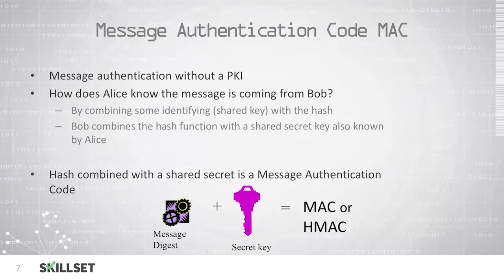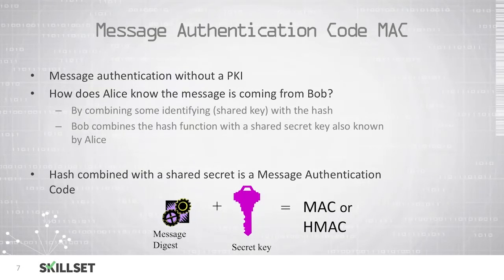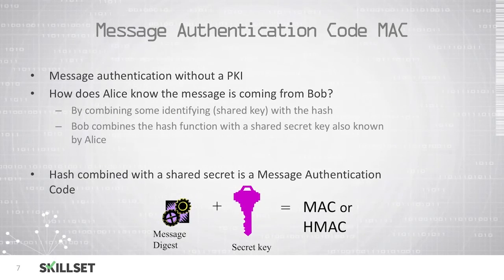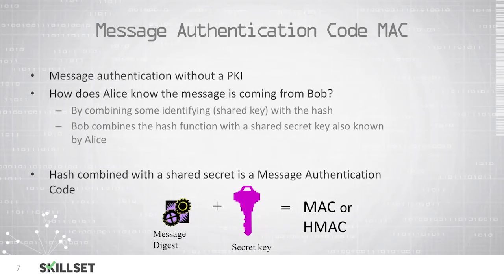We can also use message authentication code, or MAC, to authenticate without a public key infrastructure. If Alice wants to verify that a message is coming from Bob, they can both agree on some type of shared key prior to transmission. Bob can then generate a hash value for the file he's going to send Alice and combine it with the shared secret key, then send this data to Alice. Alice can then verify the hash value and the secret key in order to verify that the data is accurate. We refer to this as MAC, or message authentication code, or HMAC, hash-based message authentication code.